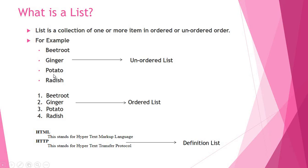In an unordered list, items can be placed in any order — that is why it is called unordered. In the case of an ordered list, for example, a list of classmates arranged by roll number — that is an ordered list. The third type is the definition list, where we define a word or write the explanation of any term. So we will study three types: unordered list, ordered list, and definition list.